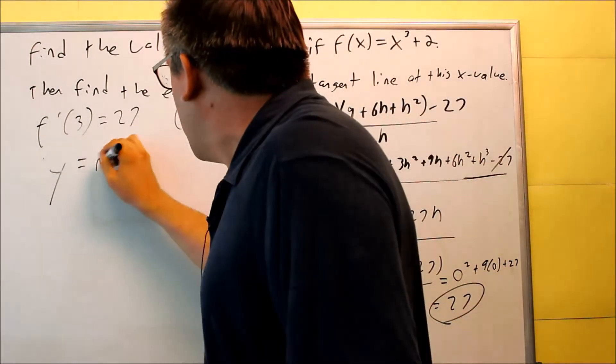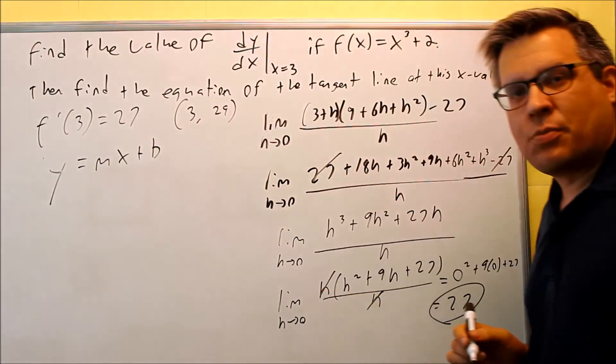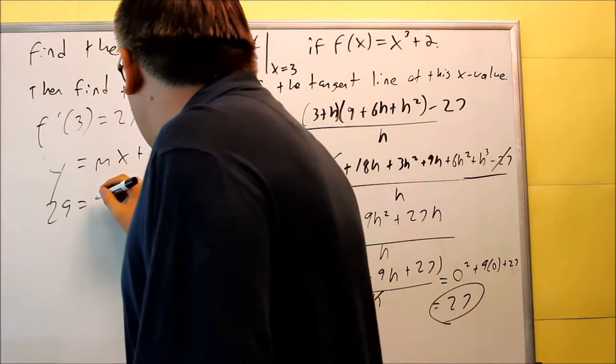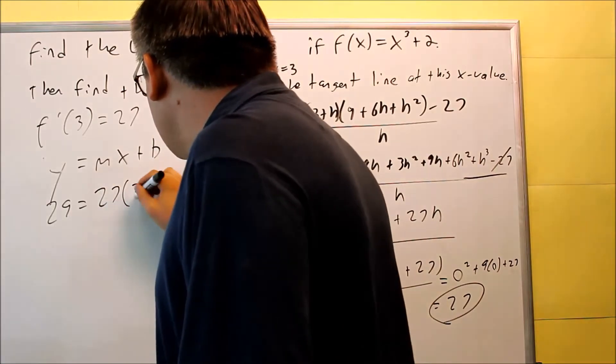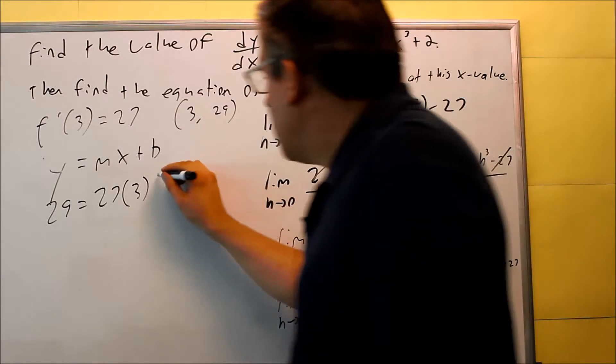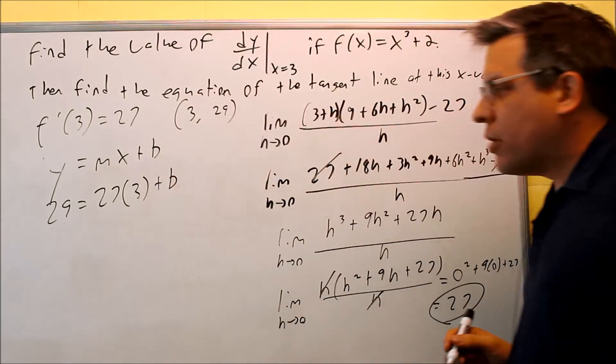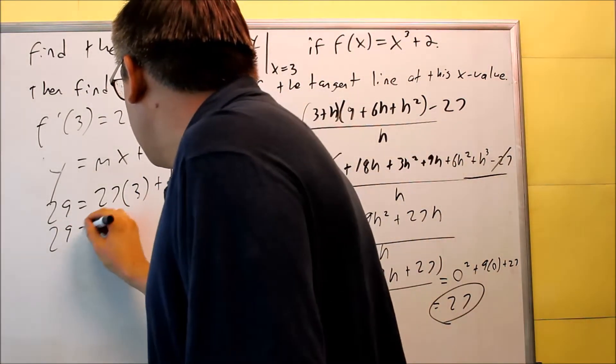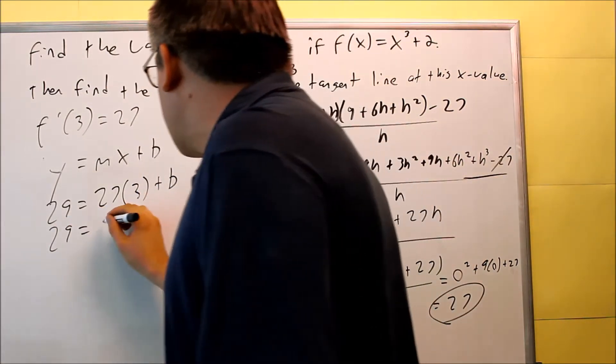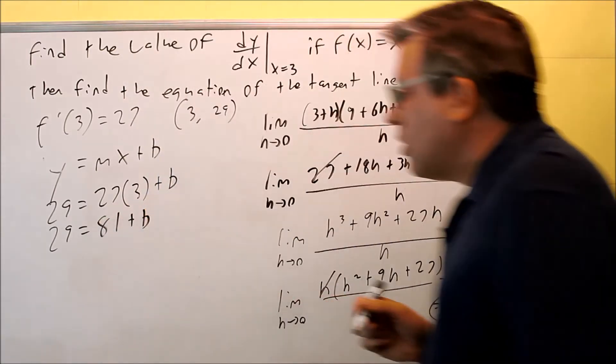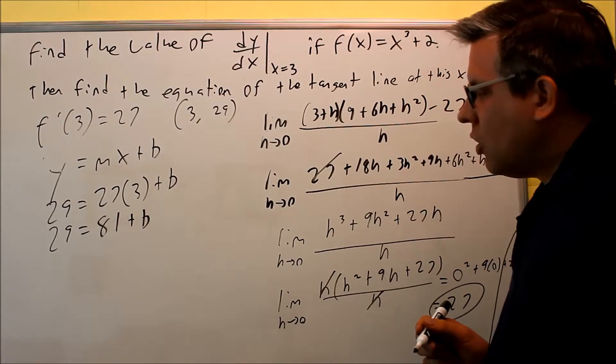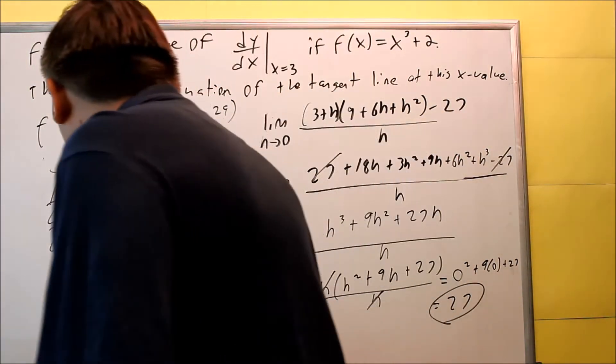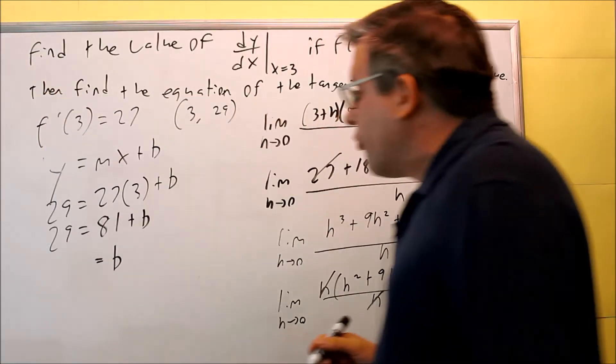We're going to come back to what we did before in a previous section. We're going to start with y equals mx plus b. We're going to put in the x and the y. 29 equals my slope, which is 27, times my x, which is 3, and then plus b. So you have 29, and when we multiply this out, we're going to get 81 plus b. We're going to subtract 81 from both sides, and we finally get our answer for b right there.